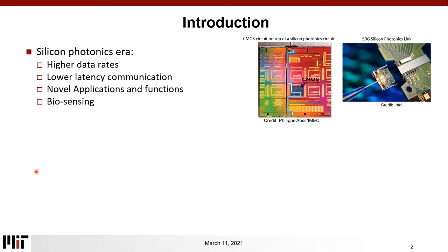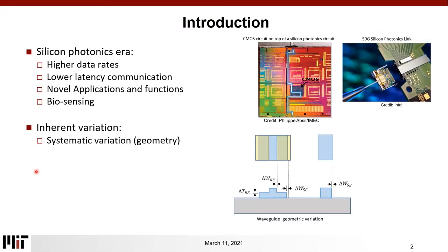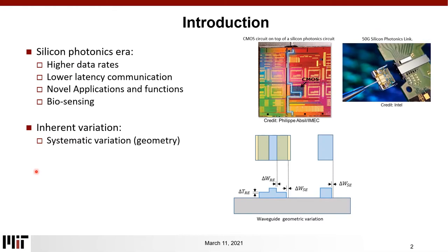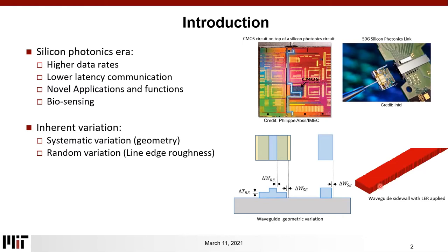However, in Silicon Photonics, the existing infrastructure of CMOS is used in fabricating the optical components. This means that the process variations found in CMOS are inherently transferred to the optical components. These variations can be either systematic, like width and thickness variations, or they can be random like line-edge roughness. This inheritance of process variations represents a key challenge for Silicon Photonics, which is the lack of variation-aware models that can predict the performance of optical components in the presence of this process variation.